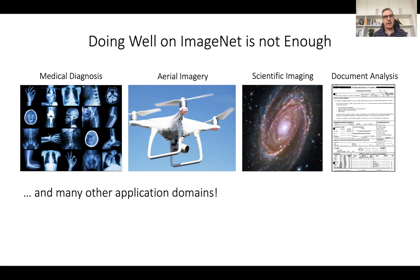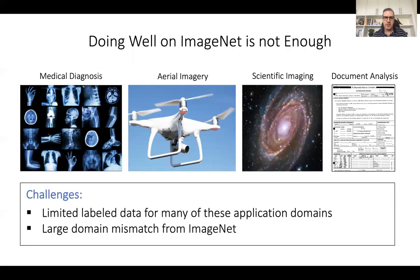Examples include medical diagnosis, images from drones, scientific images, document analysis, and many other application domains. As we move towards visual recognition models that are more generalizable, there are two main challenges. One is how to train models using limited label data — in many of these domains, data might be hard to get, annotation too costly, or we may face issues with privacy or usage rights. The second challenge is that images from these domains might be very different from ImageNet, so we have a large domain shift.